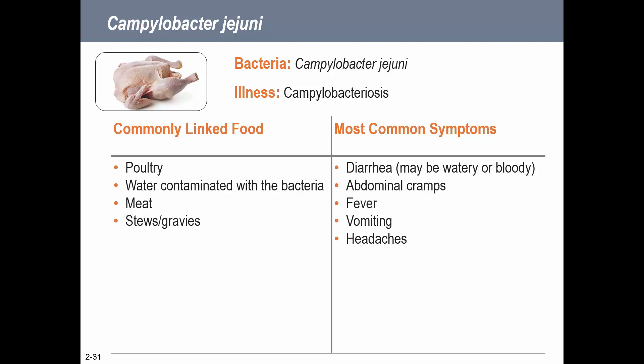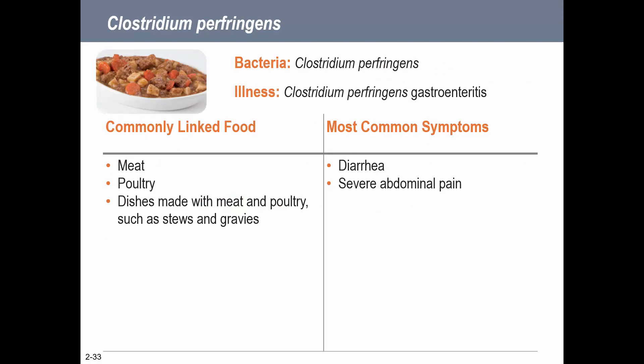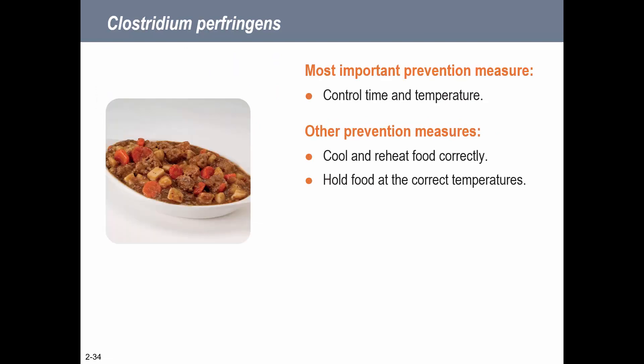Campylobacter jejuni is commonly found in poultry and several other sources, and has a wide variety of symptoms. Controlling time and temperature is most important, but especially cooking poultry to the required minimum temperature - we don't normally see rare poultry being served, and we shouldn't. Clostridium perfringens is commonly found in meat and poultry or dishes made with those, and again controlling time and temperature is most important.